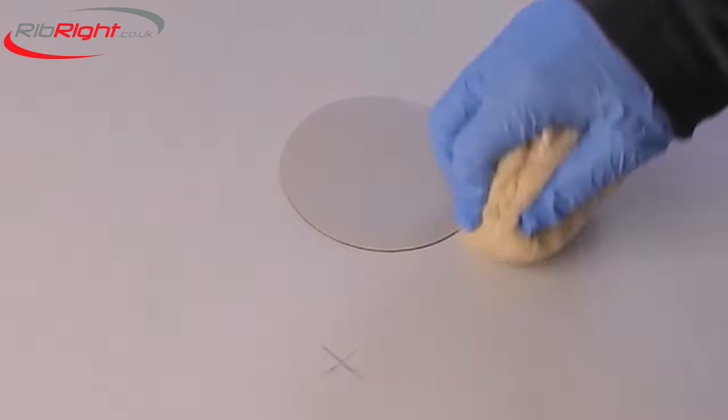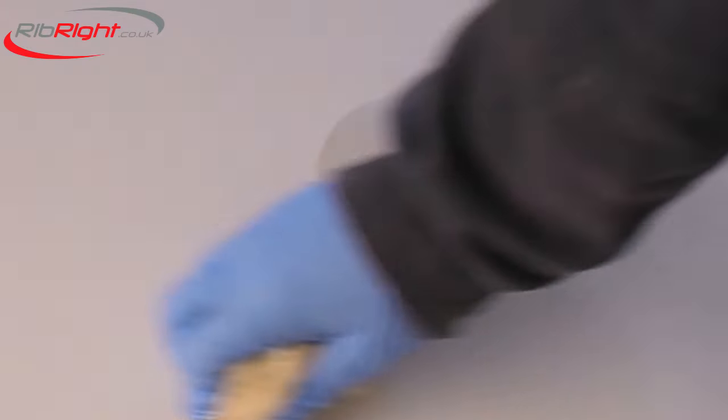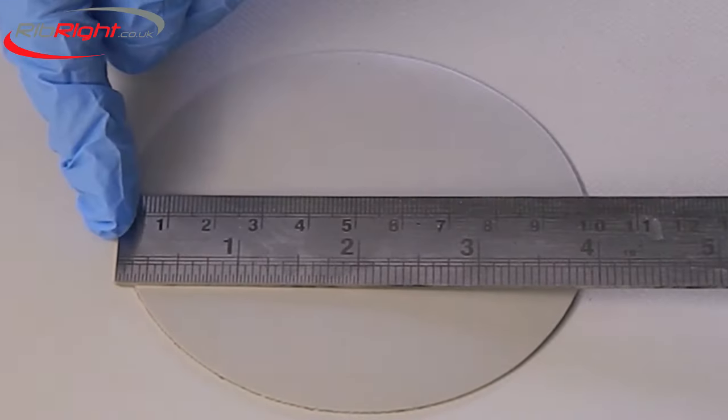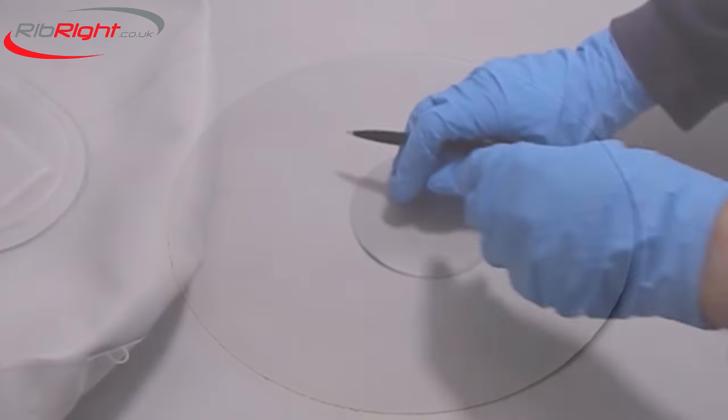Wipe over the repair area and the patch with a PVC solvent or M.E.K. Then cut an appropriate patch. This should be at least 30mm in every direction of the hole.